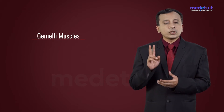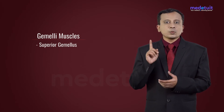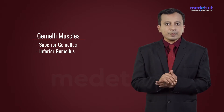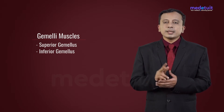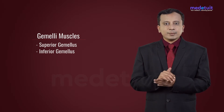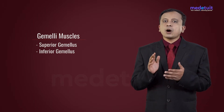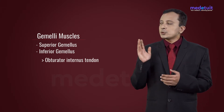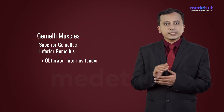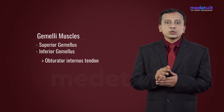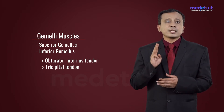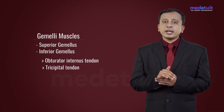Gemelli muscles — there are two gemelli muscles: the superior gemellus and the inferior gemellus. These two gemelli muscles go along with the obturator internus tendon, so they are called the tricipital tendon.